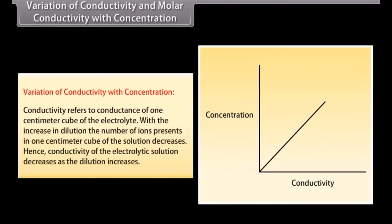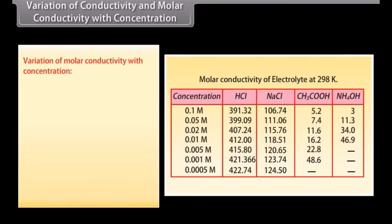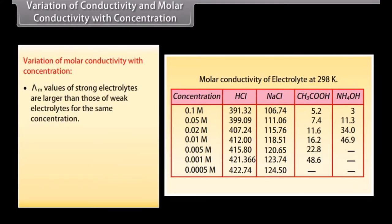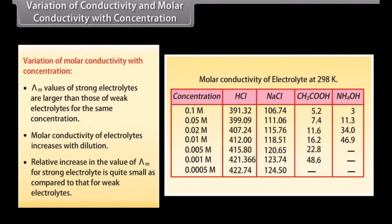Variation of conductivity and molar conductivity with concentration. Conductivity refers to conductance of 1 cm³ of the electrolyte. With increase in dilution, the number of ions present in 1 cm³ of the solution decreases, so conductivity of the electrolytic solution also decreases as dilution increases. Regarding molar conductivity: λm values of strong electrolytes are larger than those of weak electrolytes for the same concentration. Molar conductivity of electrolytes increases with dilution. The relative increase in the value of λm for strong electrolytes is quite small as compared to that for weak electrolytes.